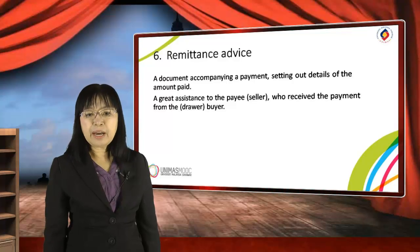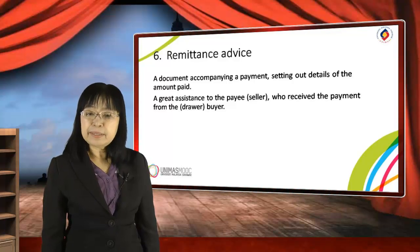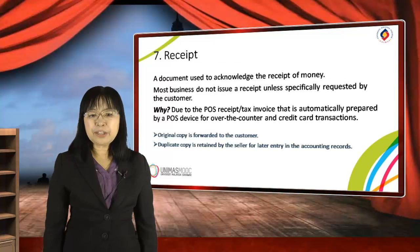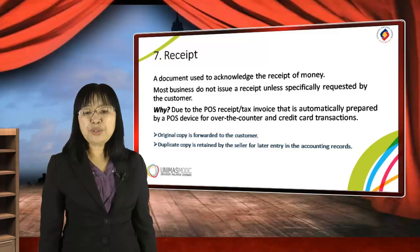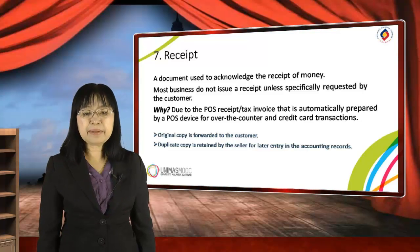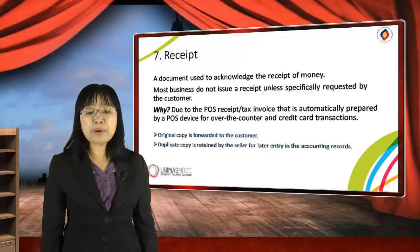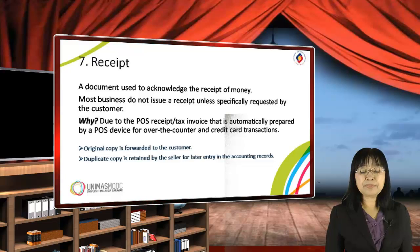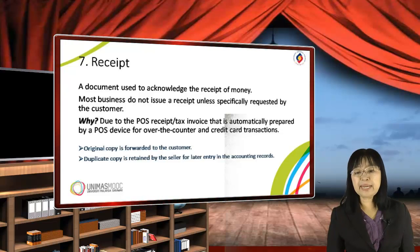Remittance advice is a document that accompanies a payment, setting out details of the amount paid. It is a great assistance to the payee or seller who receives payments from the drawer or buyer. A receipt is a document used to acknowledge the receipt of money. Most businesses do not issue a receipt unless specifically requested by the customer, as receipts are for cash transactions. In the case of point-of-sale transactions, a receipt tax invoice is automatically prepared by the point-of-sale device for over-the-counter and credit card transactions. The original receipt is forwarded to the customer, and the duplicate copy is retained by the seller for later entries in the accounting records.